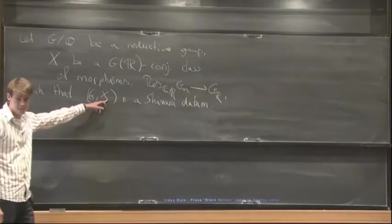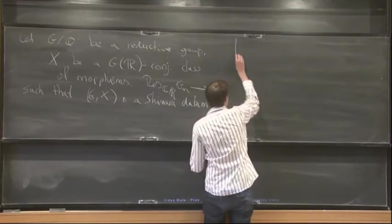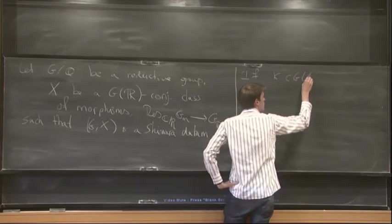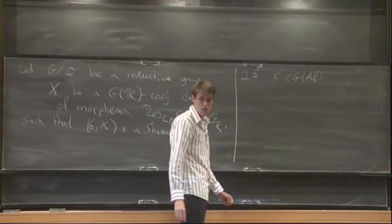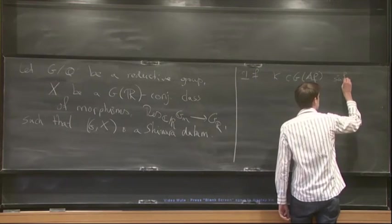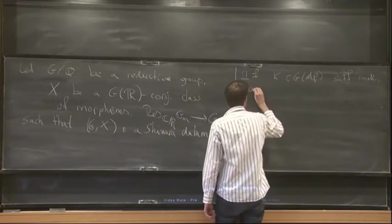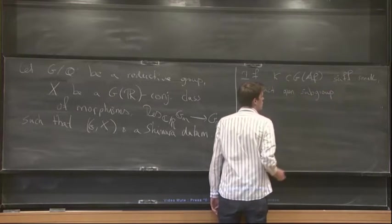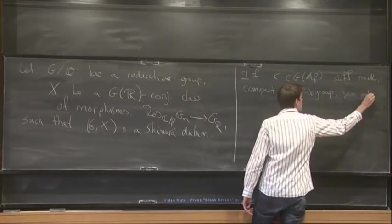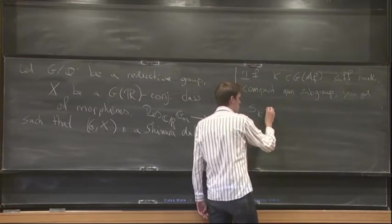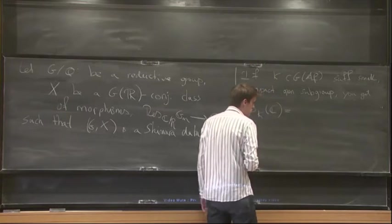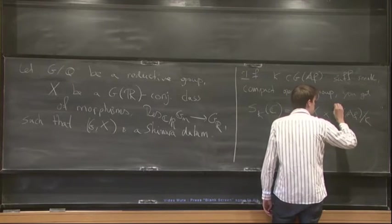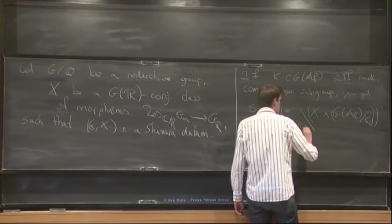So whenever you have a Shimura datum, you get Shimura varieties. Whenever K in G of the finite adeles is a sufficiently small compact open subgroup, you get this variety called S of K. And they have the property that their set of complex points is given by a double coset space. So it's X cross G of the finite adeles, modulo K, and then modulo on the left, G of Q.